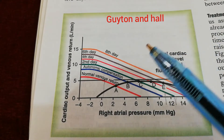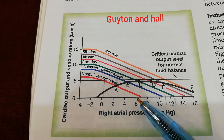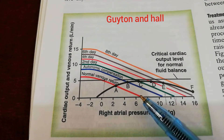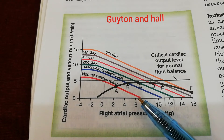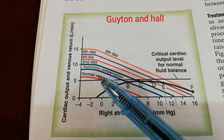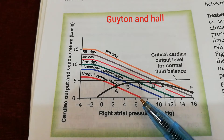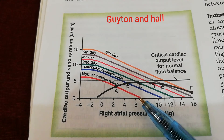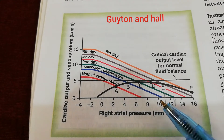The point at which the venous return curve meets the x-axis shows the mean systemic filling pressure — the pressure pushing blood towards the heart. With the autonomic compensatory processes, this mean systemic filling pressure has increased from around 7 to around 10.5 millimeters of mercury.